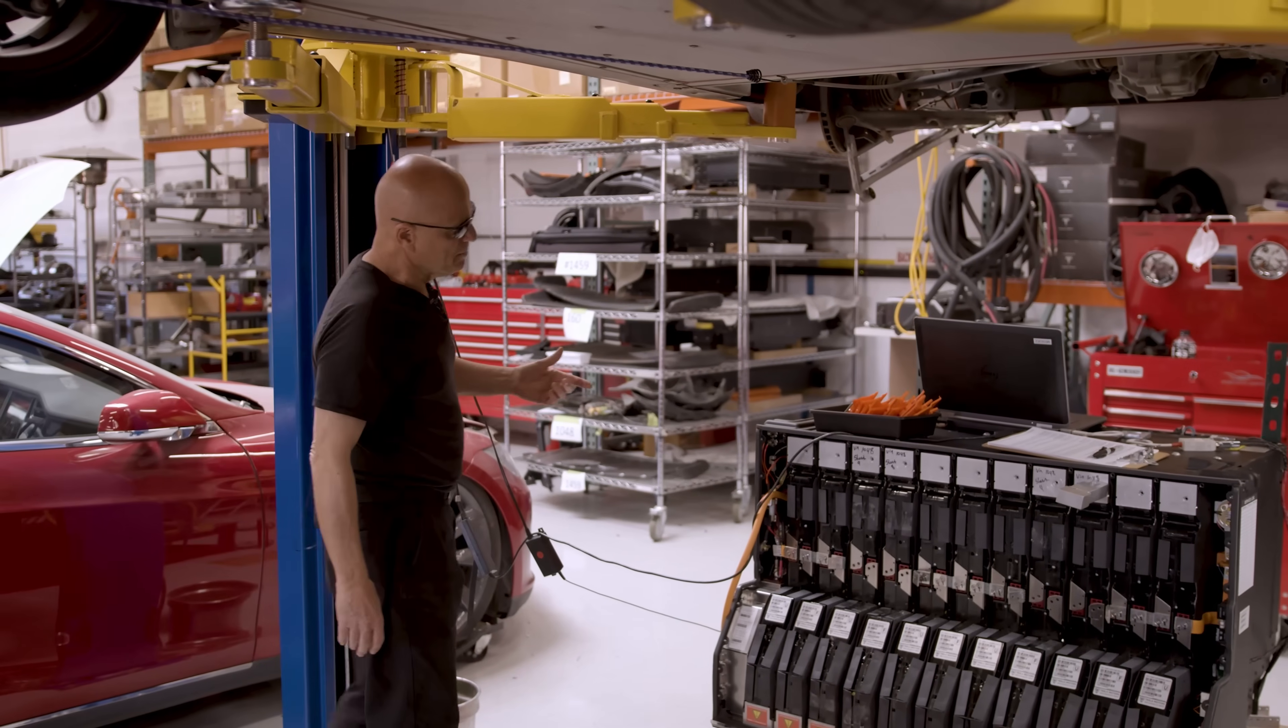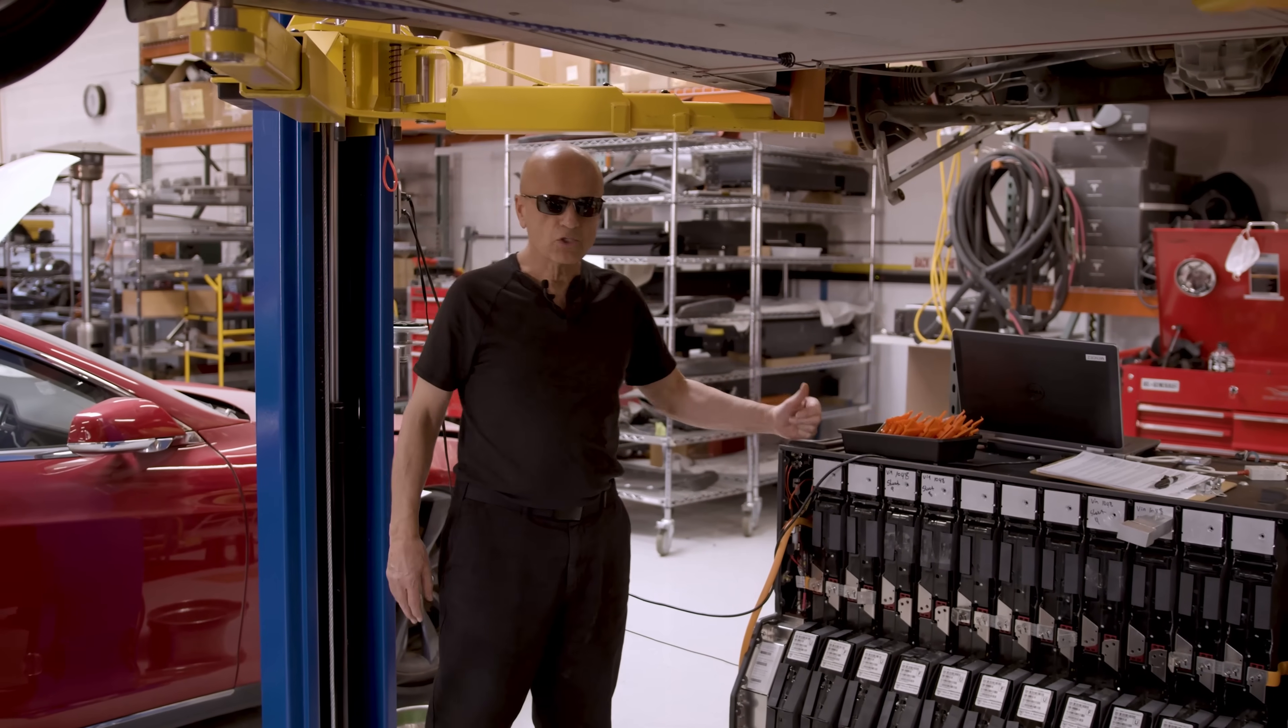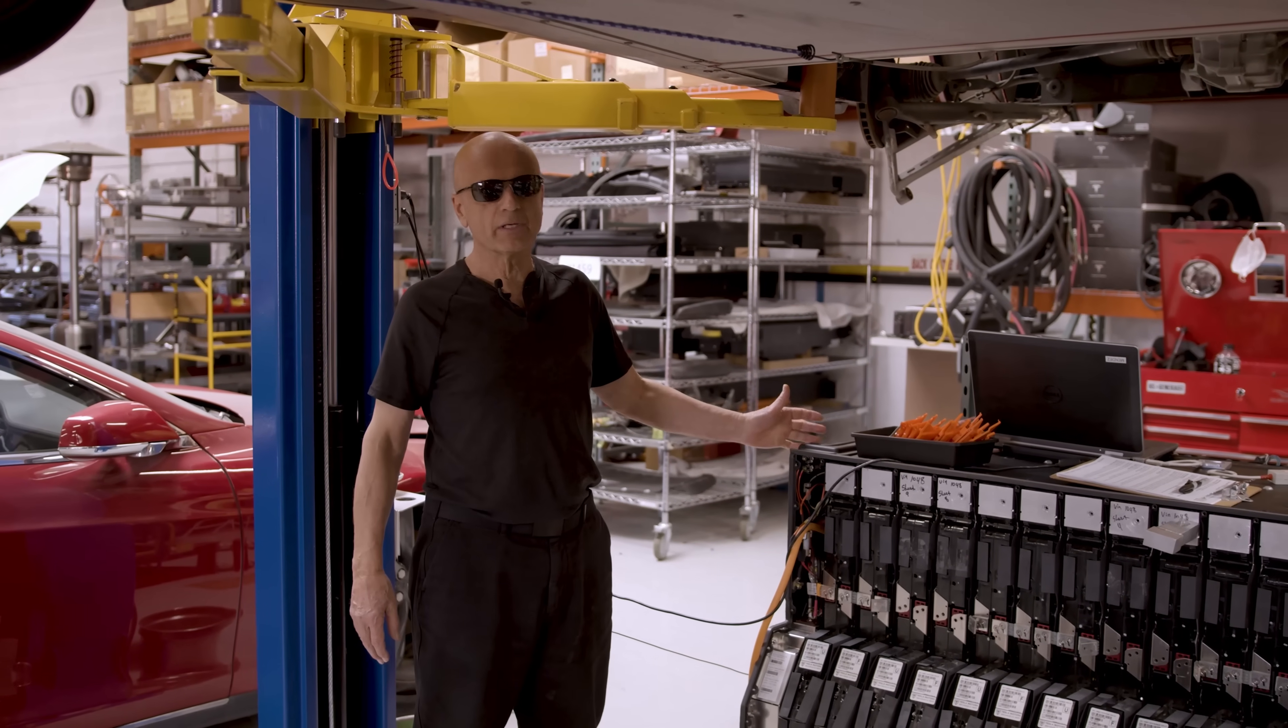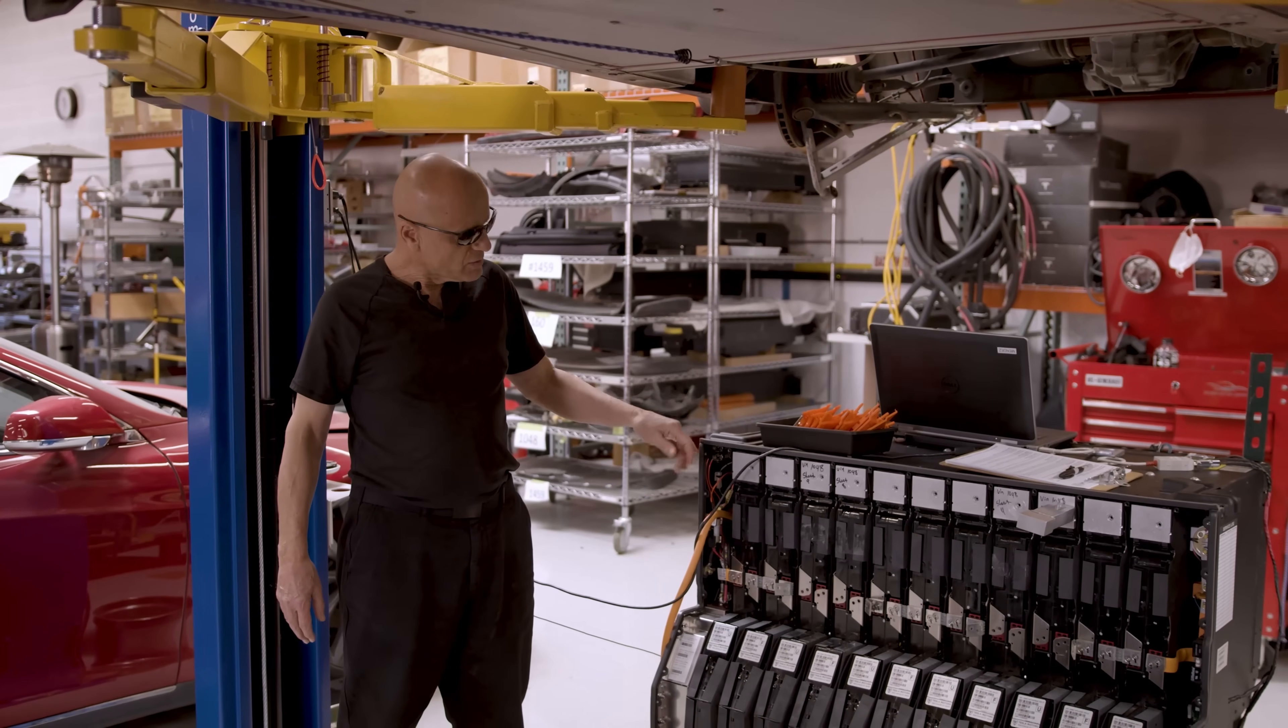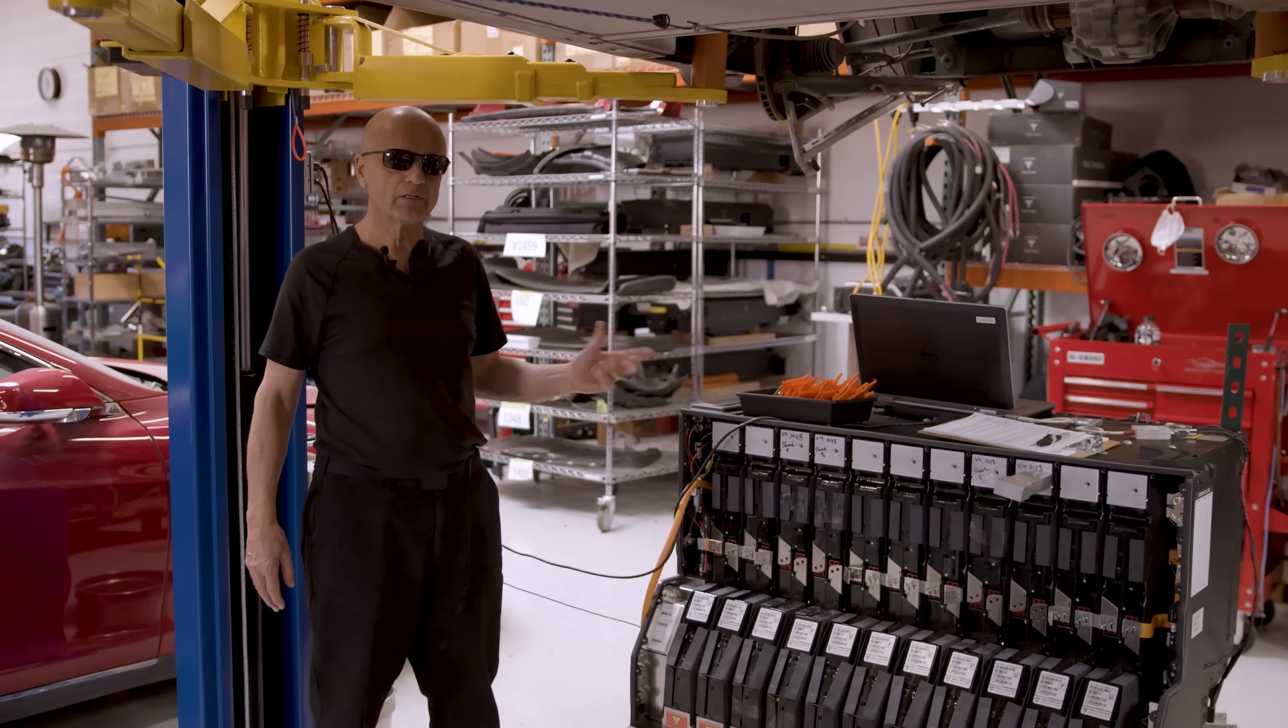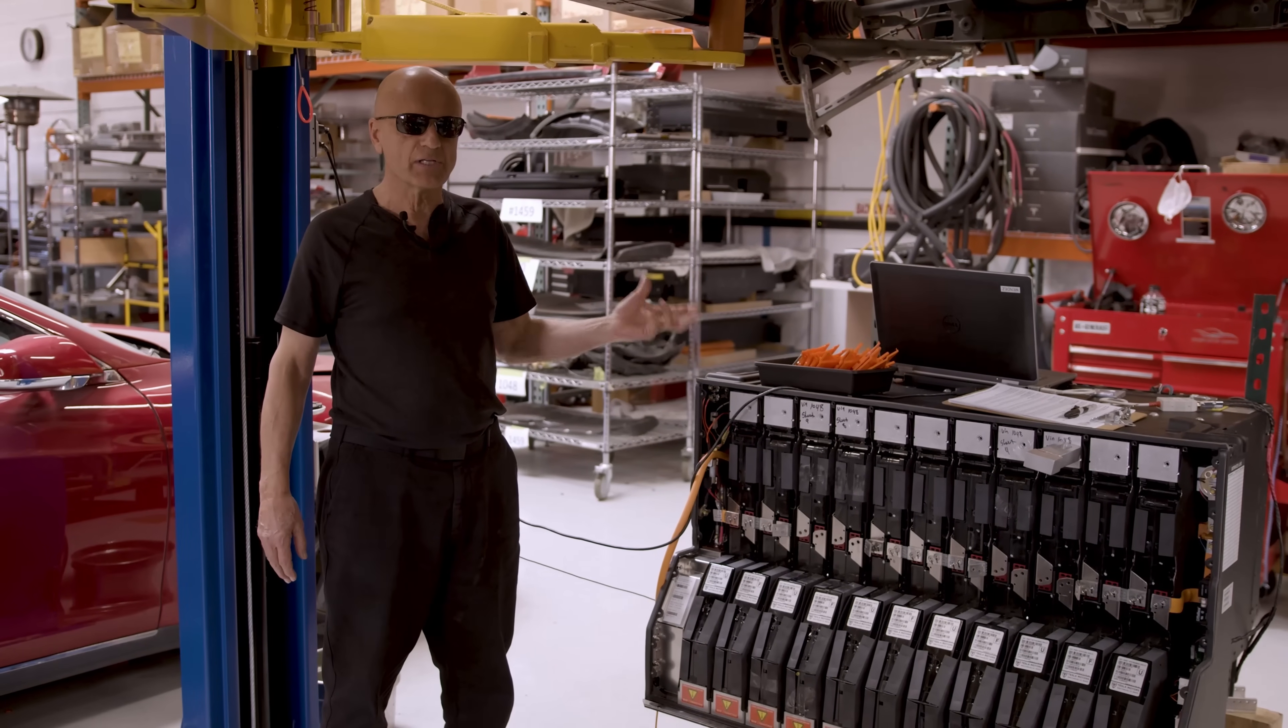The propulsion battery pack in a Roadster is called an ESS pack, which is an acronym for energy storage system. It's comprised of 6,831 individual lithium ion cells.